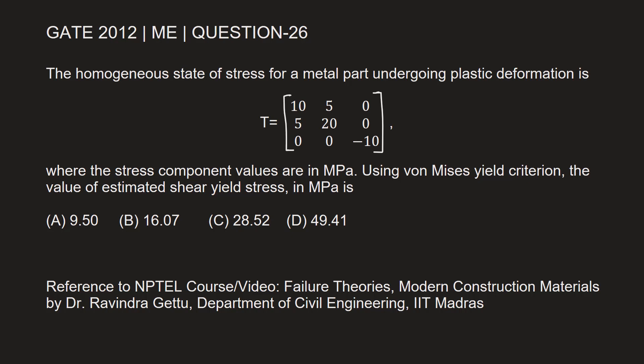This question is from GATE 2012 mechanical engineering paper, question number 26. The homogeneous state of stress of a metal part undergoing plastic deformation is T equals the matrix with elements 10, 5, 0, 5, 20, 0, and 0, 0, minus 10, where the stress component values are in megapascal. Using von Mises yield criterion, the value of estimated shear yield stress in megapascal is, let's find out.